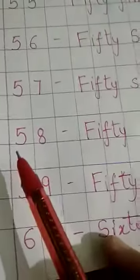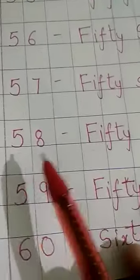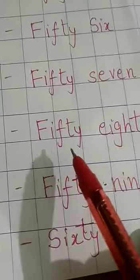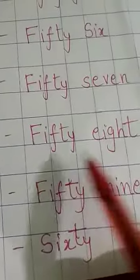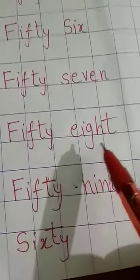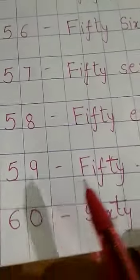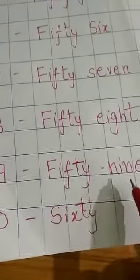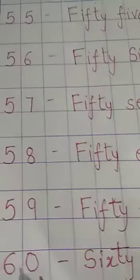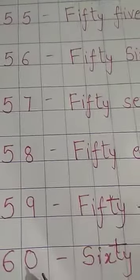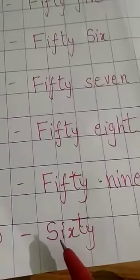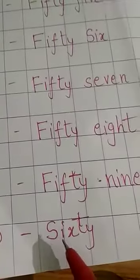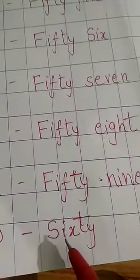After 57, we have 5858 — FIFTY-EIGHT. 5959 — FIFTY-NINE. And 6060 — that is SIX and TTY, so together SIXTY.